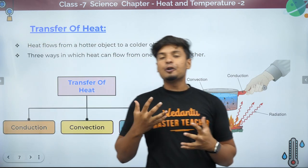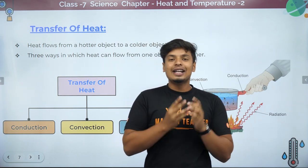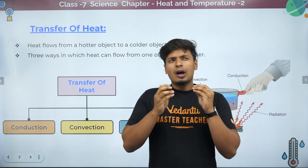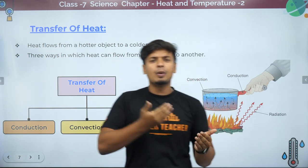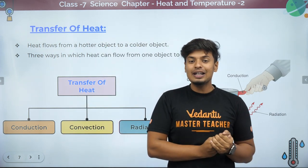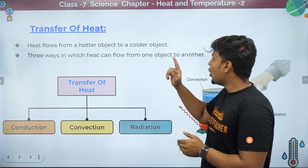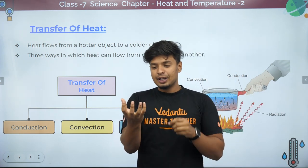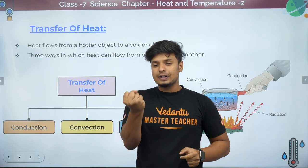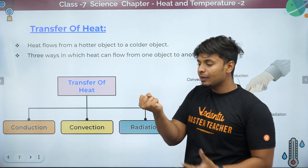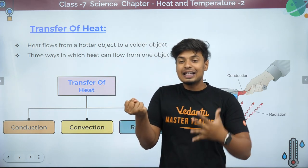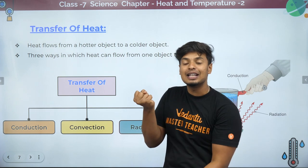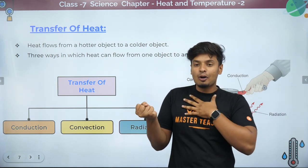Let's talk about transfer of heat. We already understand that heat is a form of energy which transfers from a hotter body to a colder body. But how does heat even transfer — how does it move from one place to the next? Heat always flows from the hotter object to the colder object. For example, if you take an ice cube in your hand and close your fist, after some time the ice cube starts to melt because heat from your body is getting transferred to the ice cube.